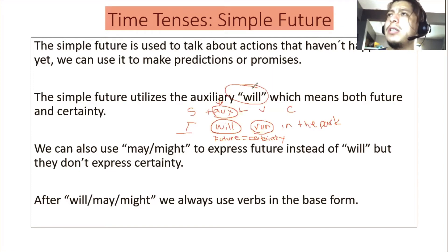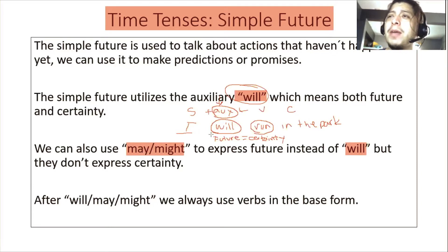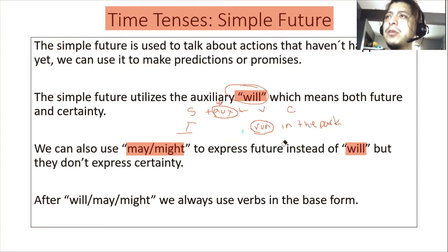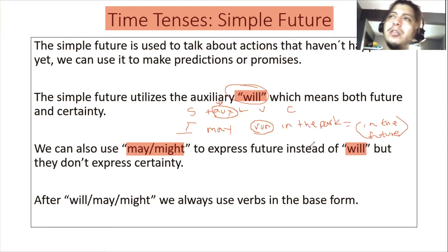There are two other auxiliaries we can use instead of 'will': 'may' or 'might.' These are modal verbs — we're going to speak about modal verbs — but these modal verbs can be used instead of 'will.' The problem is when you use 'may' or 'might,' you imply future, but you don't imply certainty. When you say 'I will run in the park,' you are making a promise. But if you use 'may' or 'might' — 'I may run' — this means in the future, but it doesn't make a promise. It's something like 'I will probably run.' When you say 'I may run,' it means tomorrow but it's not a promise — they don't express certainty.